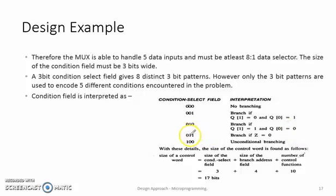If the condition bits are 011, then branching takes place if Z equals 0. If the condition bits are 100, then unconditional branching takes place.